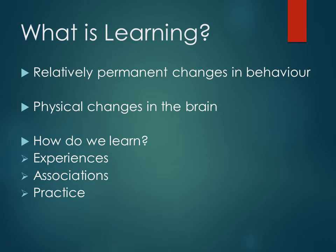Any physical change, bodily change, brain change related to body maturation, or any disease that causes changes in behavior will not account for learning. So though relatively permanent changes in behavior constitute learning, they have to be exclusive of diseases, physical damage, and body growth. For example, if you sleep in a bad position and wake up with a cramp and can't walk straight — that's a change in behavior but has no connection to learning.